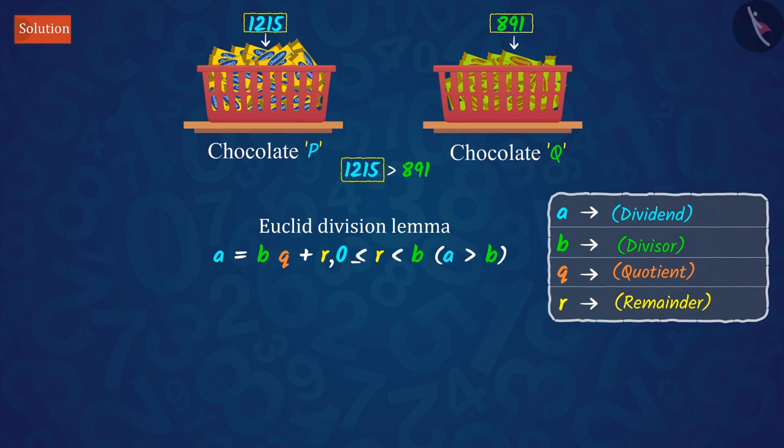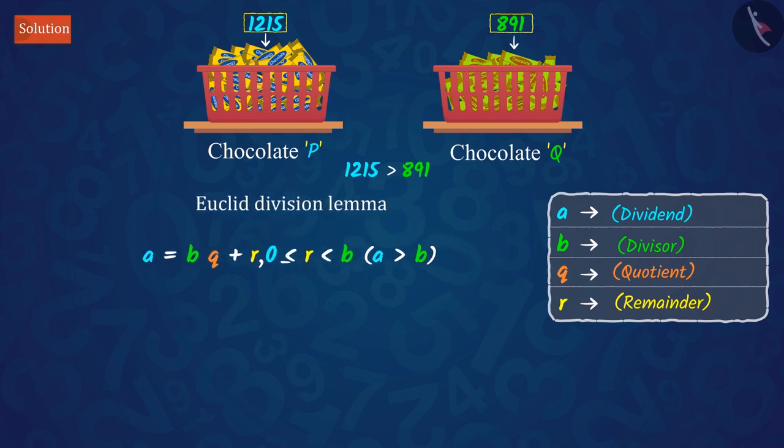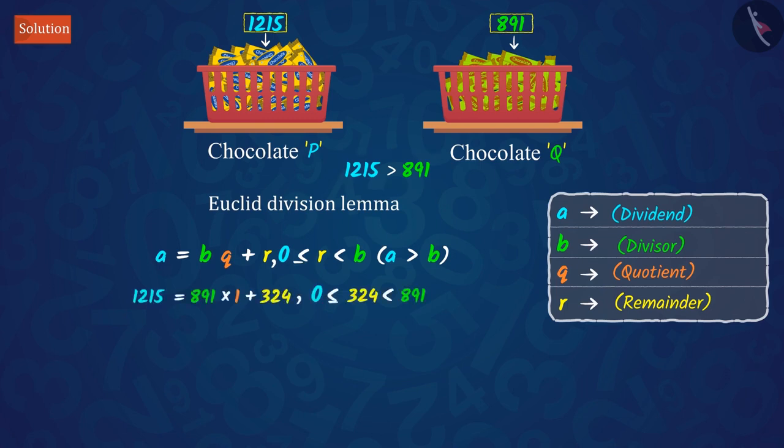Here, 1215 is greater than 891. Now, we will use Euclid's division lemma on these, which gives us this value.